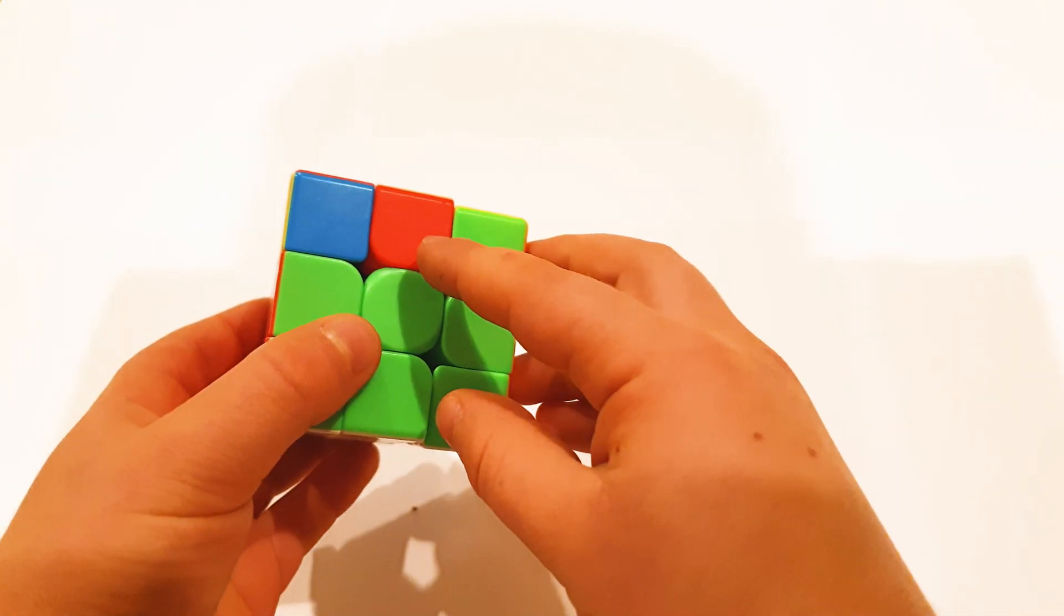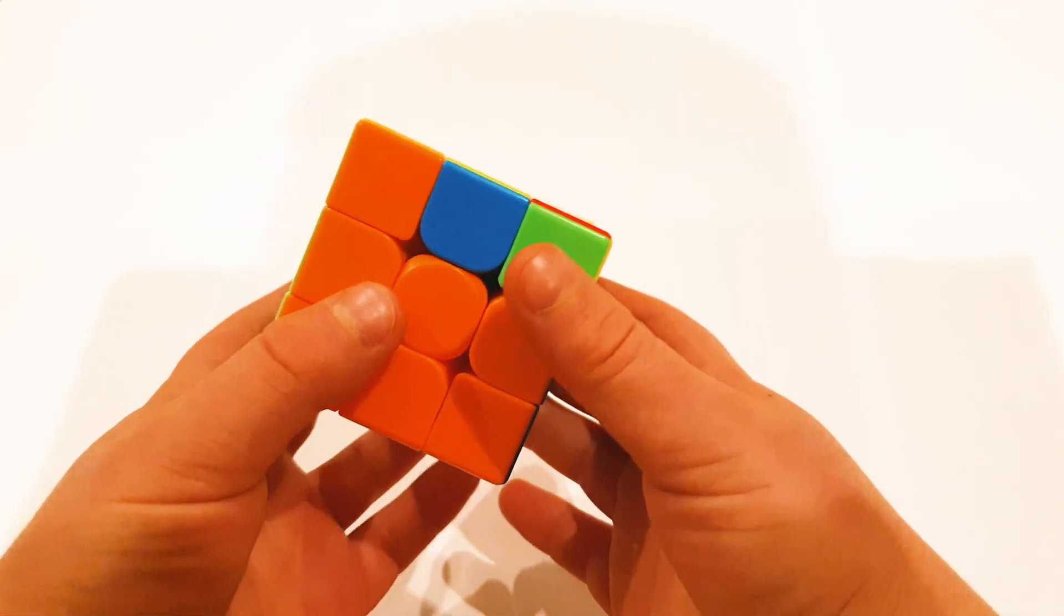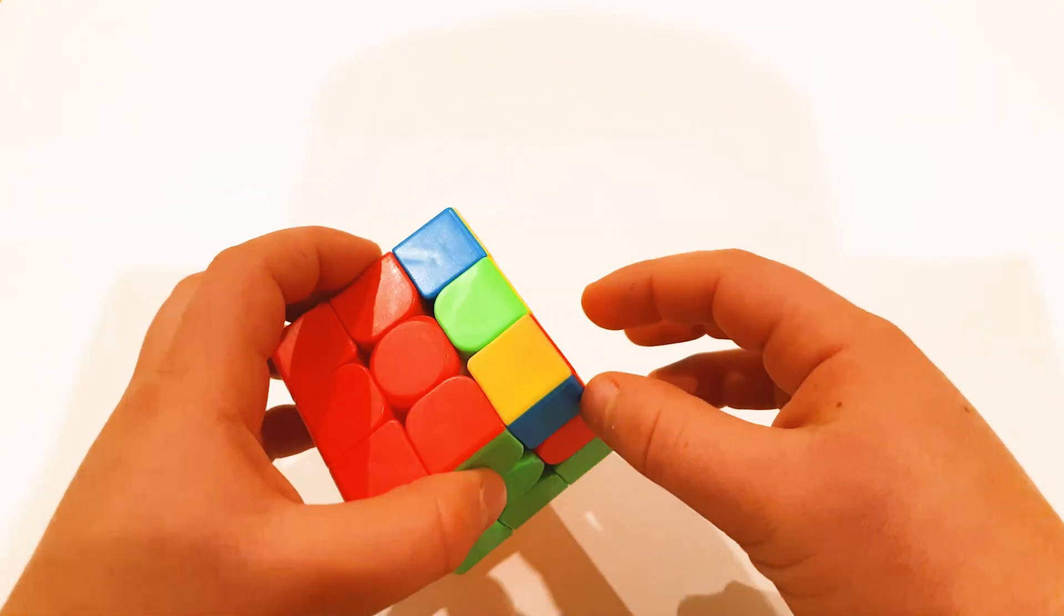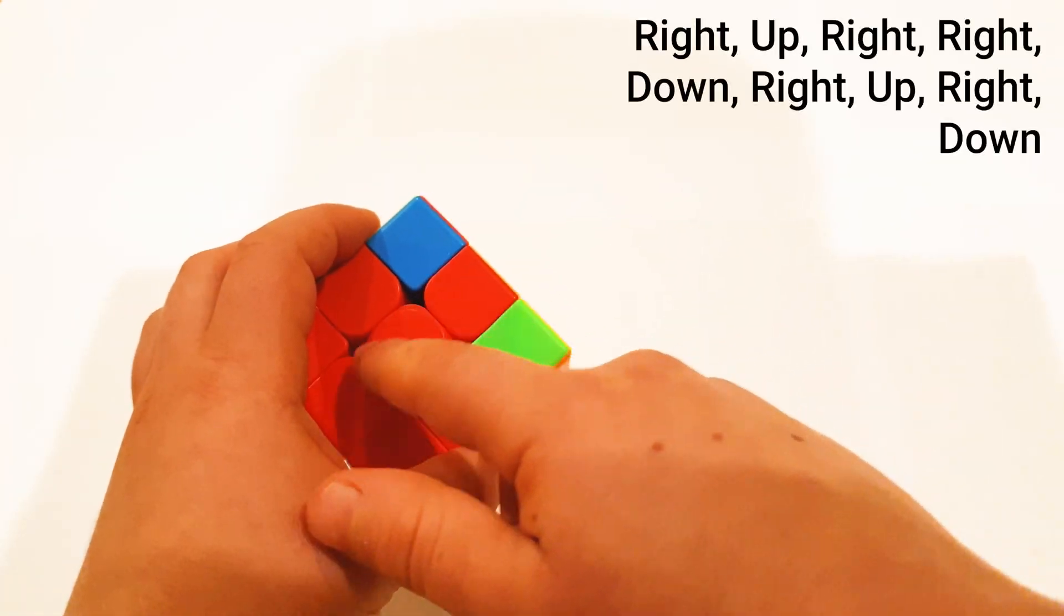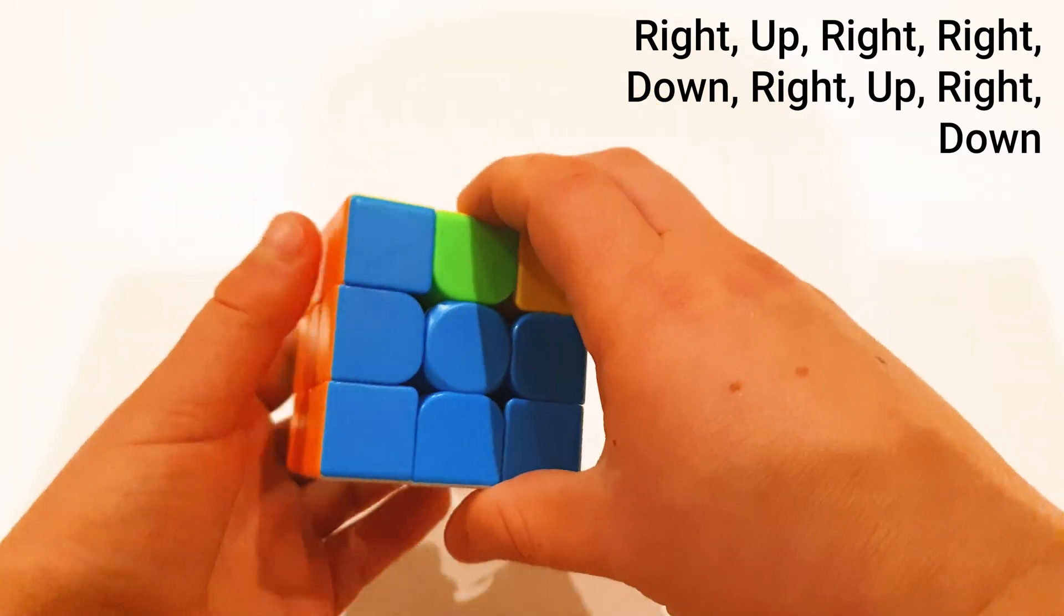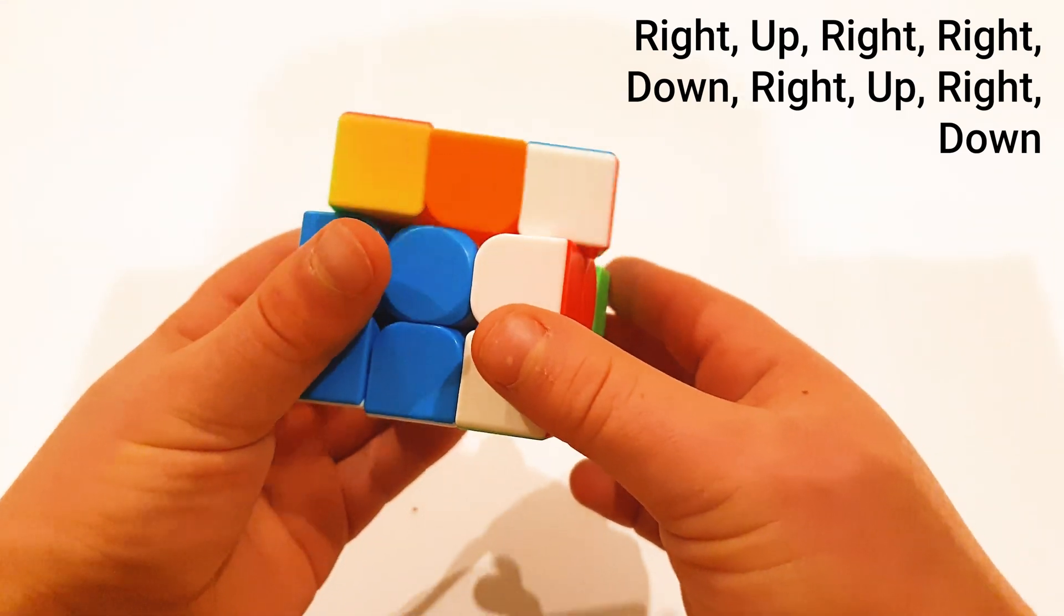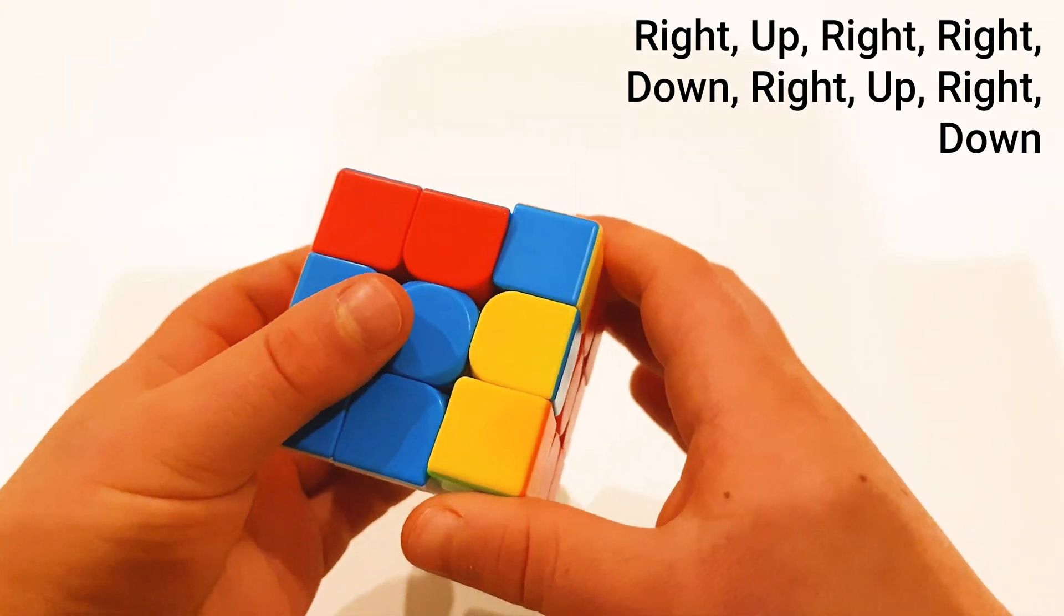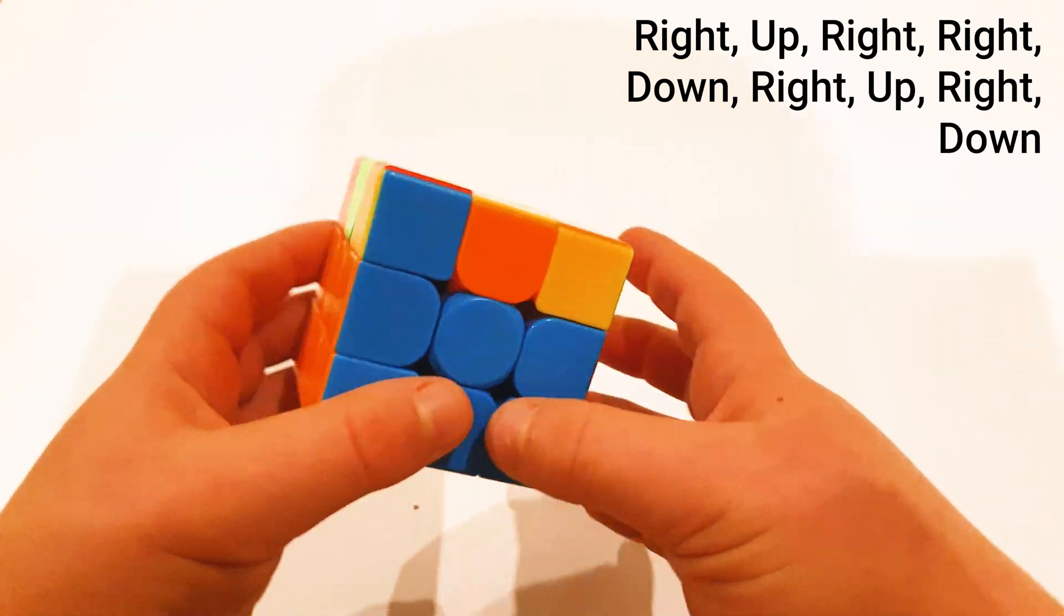The goal of this step is to make these parts of the edge pieces be the same as the centers. So first, you need to match as much of these by only moving this. So I turned it and I got red, orange. But I got here too. So the algorithm is: top right, right side up, top right two times, right side down, top right, right side up, top right, and right side down. And it's changed.